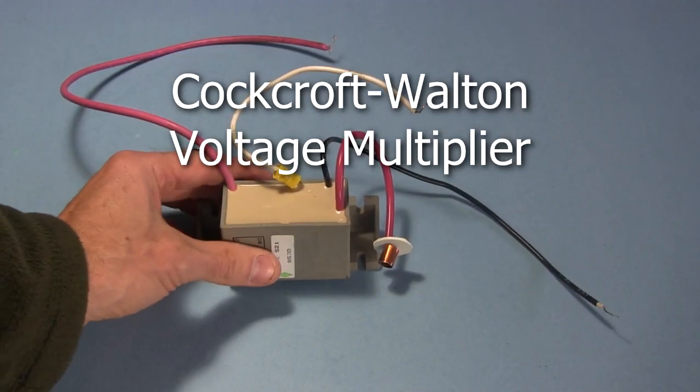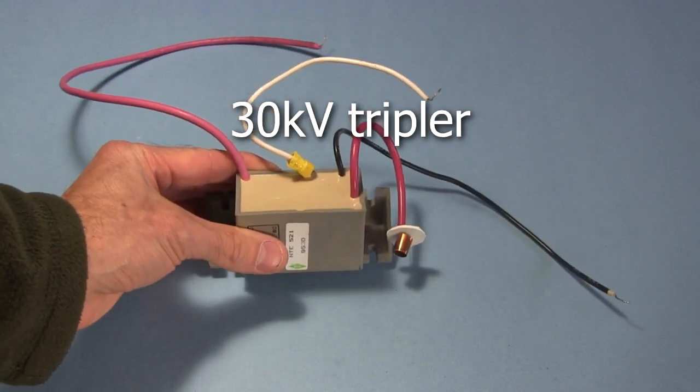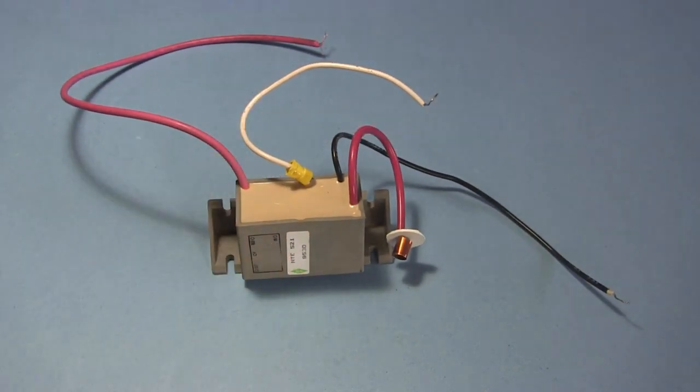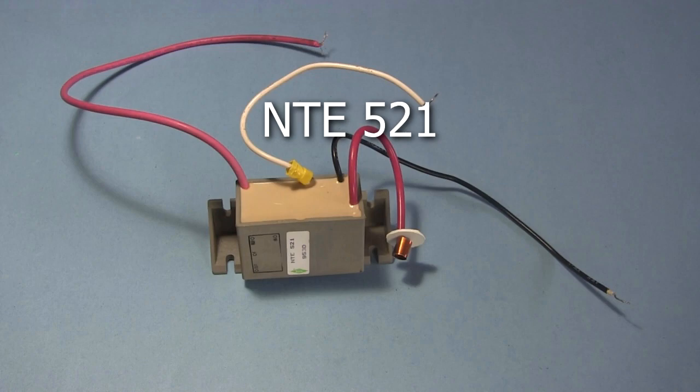You'll need a Cockroft Walton voltage multiplier. It's also known as a 30kV tripler. I ordered this one through a local electronics store. It's the NTE 521.